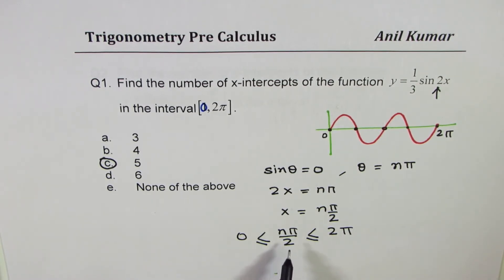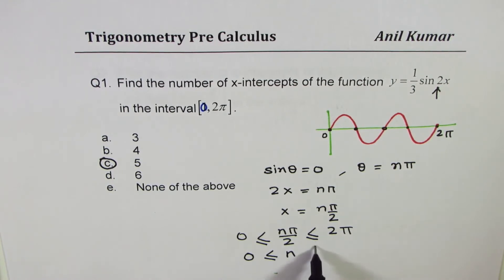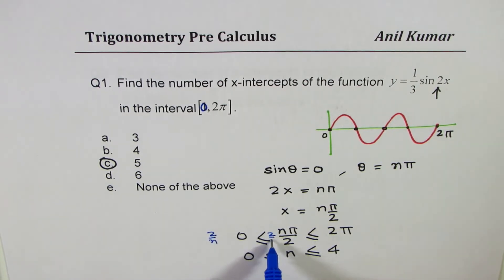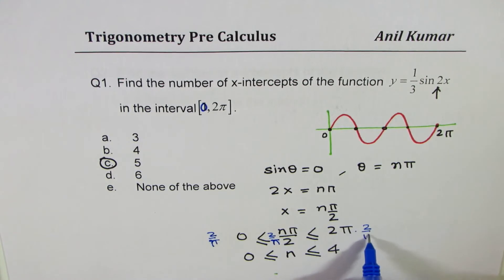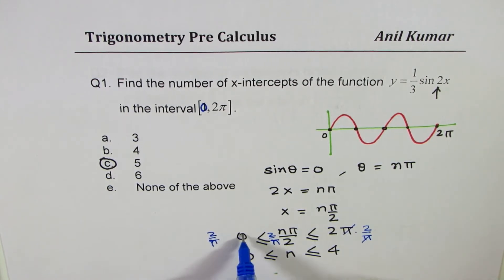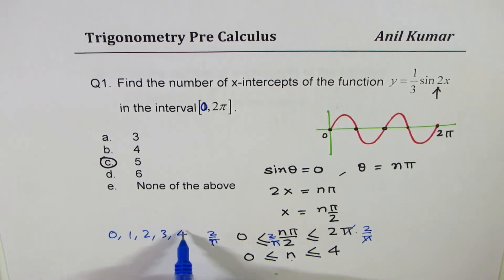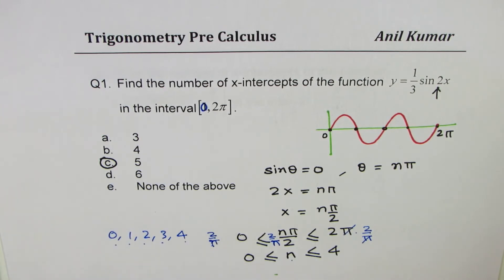We multiply everything by 2/π to isolate n. The π cancels, giving 0 ≤ n ≤ 4. The integer values between 0 and 4 inclusive are 0, 1, 2, 3, and 4 — that's 5 values, so the number of solutions is 5.